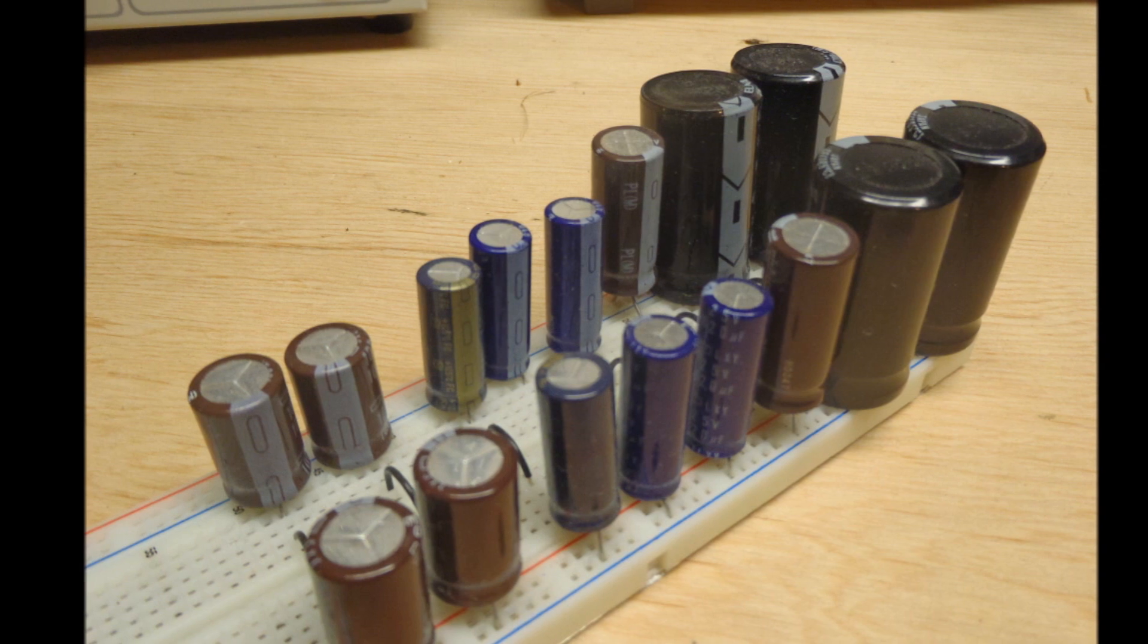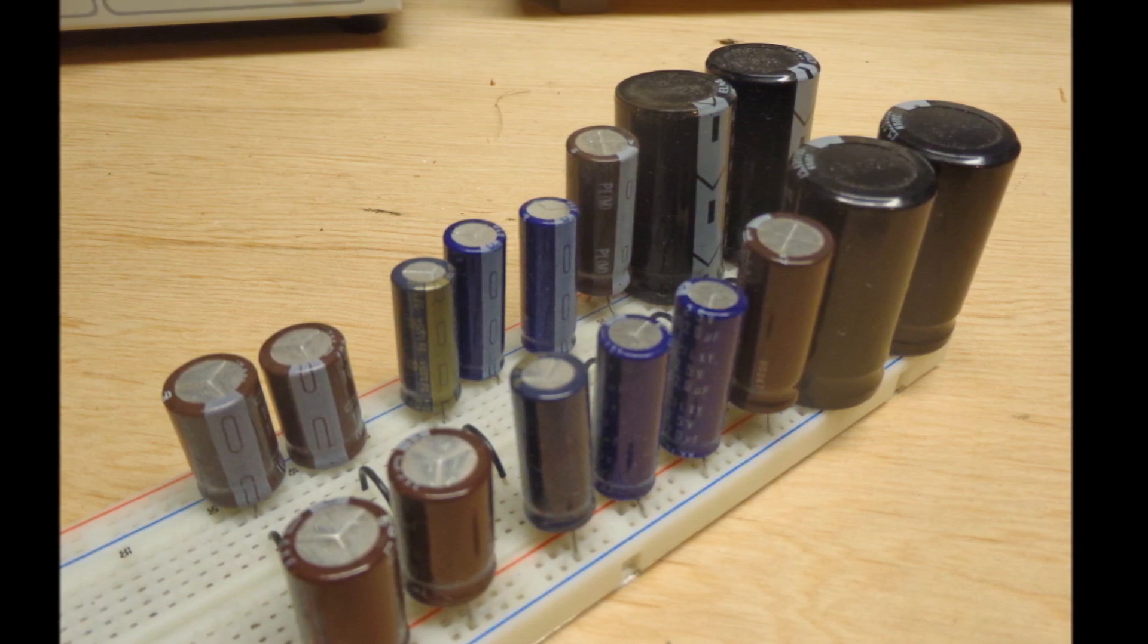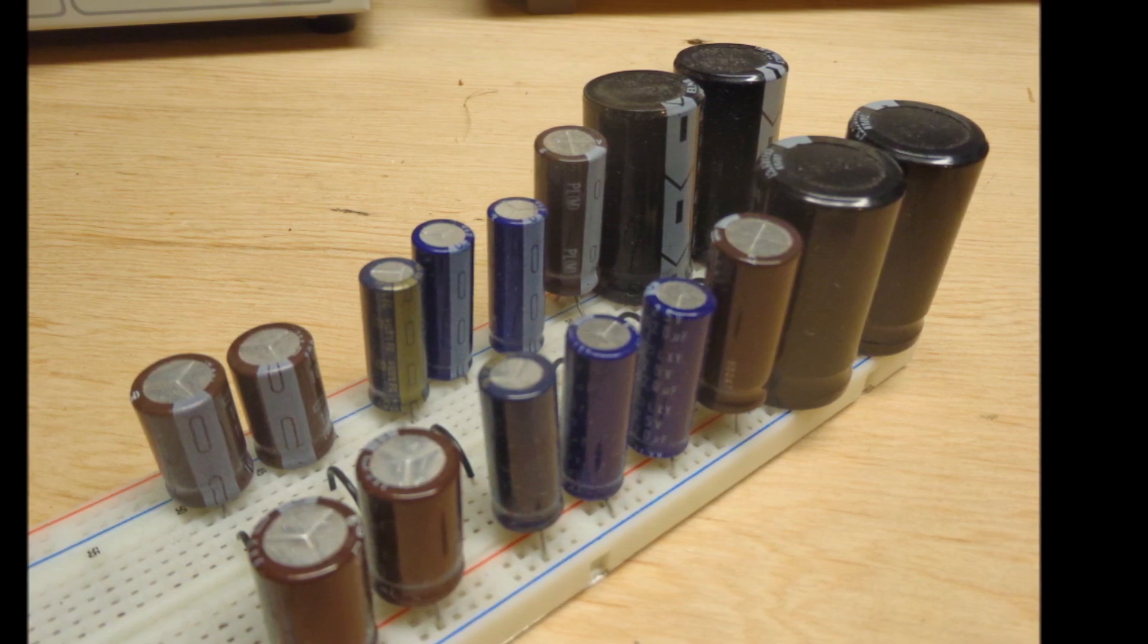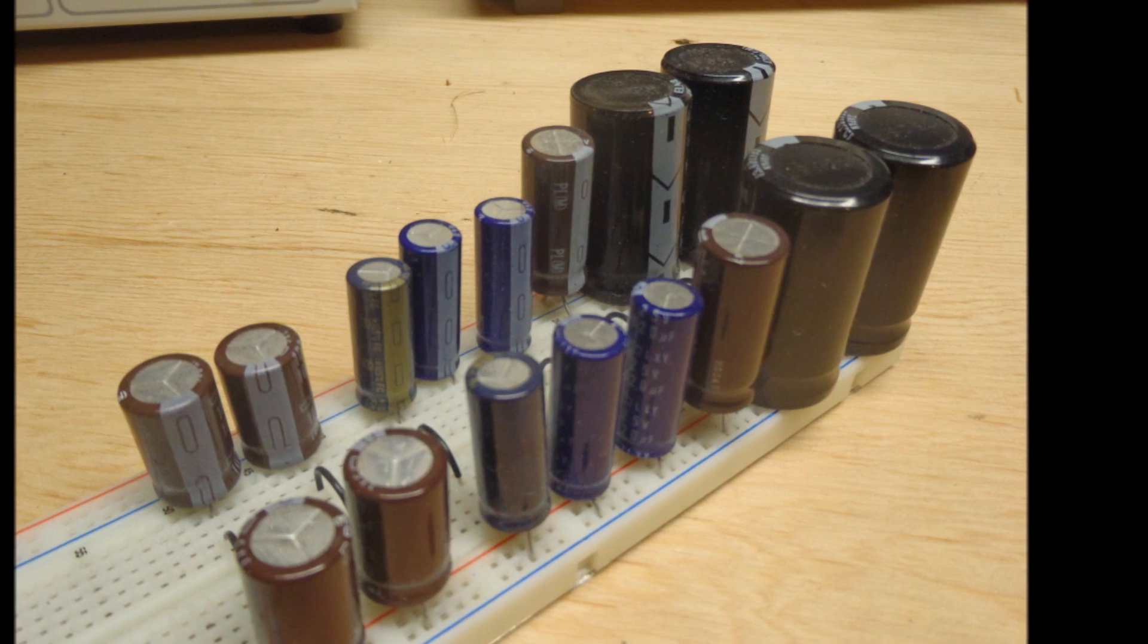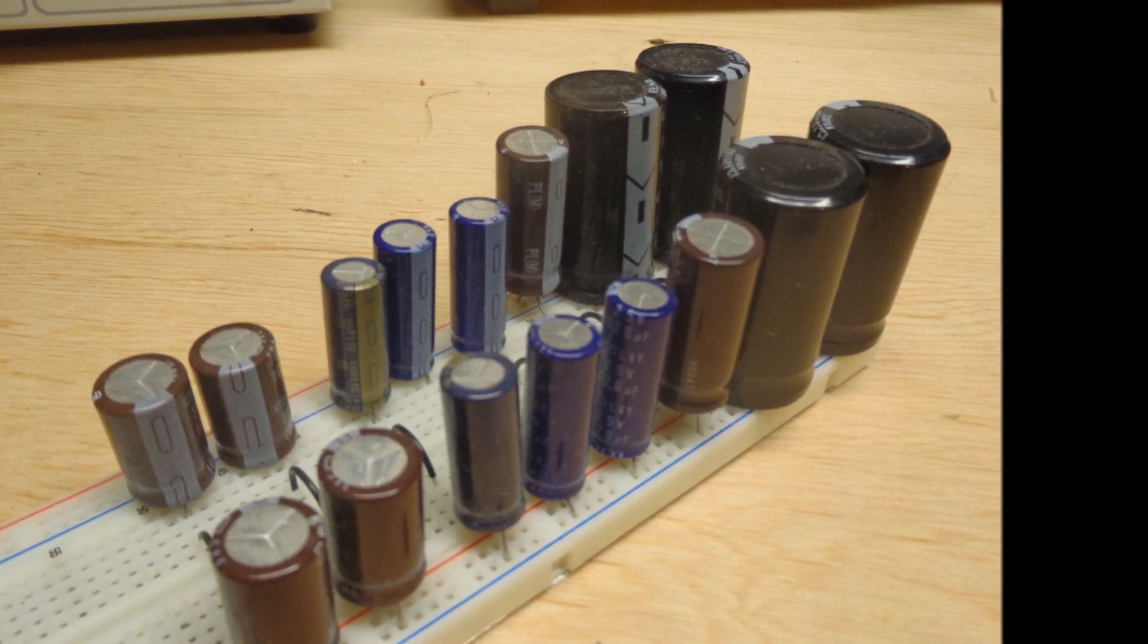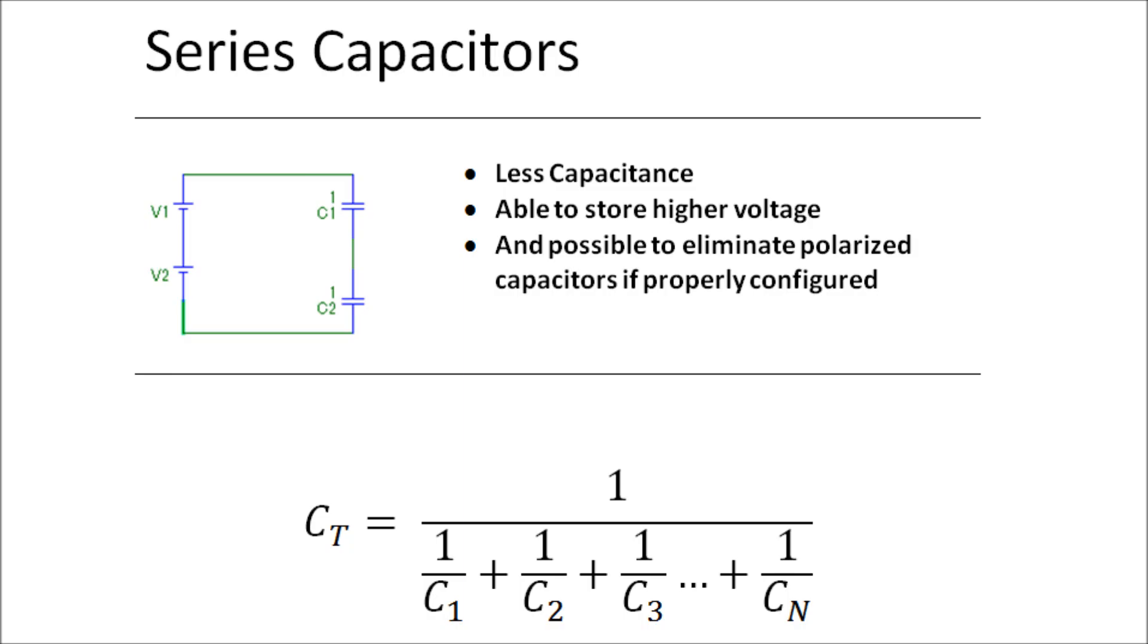In general, we use capacitor banks to store potential energy. There are other purposes such as power factor correction or voltage protection in a circuit where it eliminates voltage spikes, but our focus today is just going to be on storing potential energy.